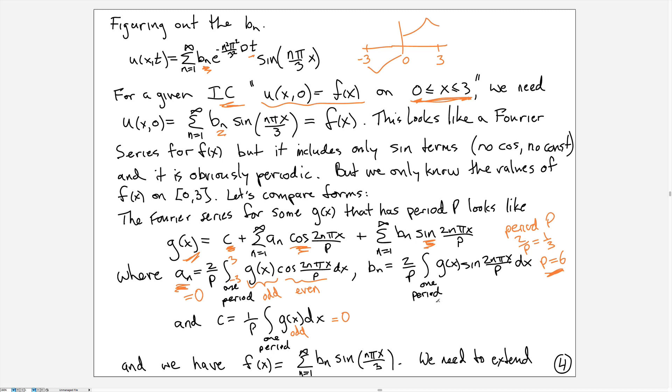So the other important feature is that we need to be able to calculate these b_n values. So in this case, this 2/p will be replaced by 1/3, and the integral will go from minus 3 to 3, but now we have an odd function multiplied by an odd function, and the product of two odds will give us an even function. And the integral of an even function across a symmetric interval, we can save a little bit of effort. We can write this as 1/3, integral from only half the interval, and double it. So I'll put a 2 up there.